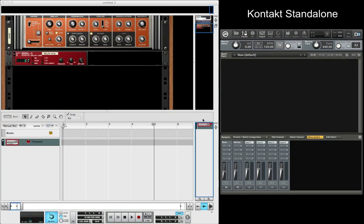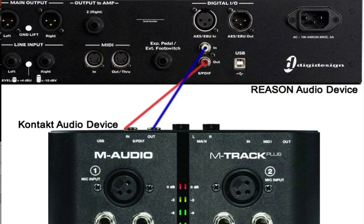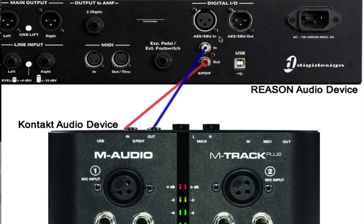All you're going to need is Windows or OS X, Reason, Contact, and two audio devices that have digital I/O. I'm using an M-Audio M-Track Plus and my 11 Rack — they both have S/PDIF I/O and that works fine. You could use AESBU if you want. There are just tons of different digital I/Os out there; just find two different devices, you have to have two, and hook them up digitally.